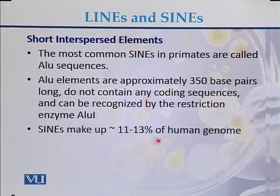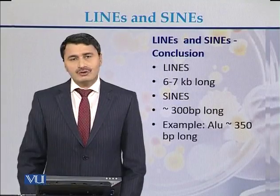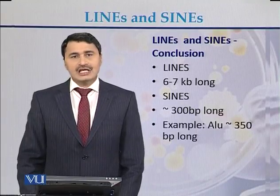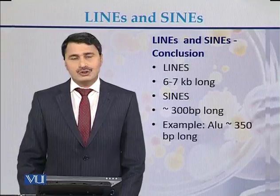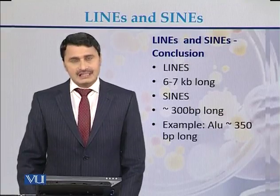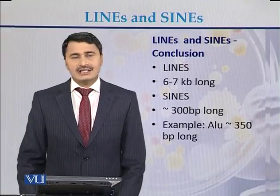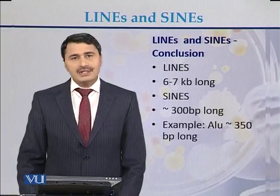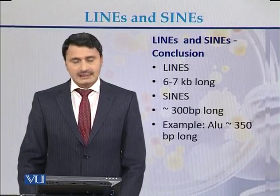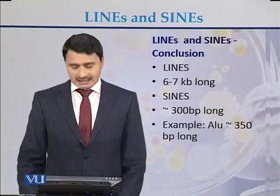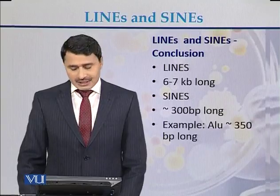To conclude: SINEs make up 11 to 13% of the human genome. LINEs are long interspersed nuclear elements, 6 to 7 kb in size. SINEs are short interspersed nuclear elements, up to 300 base pairs in size. The most common example of a SINE is ALU repeats, which are approximately 350 base pairs in size.